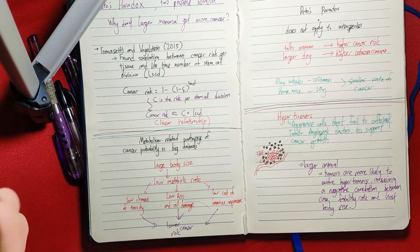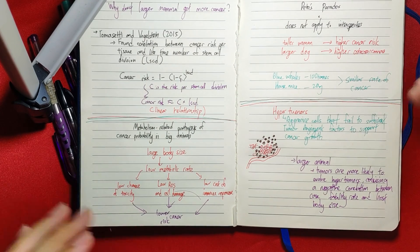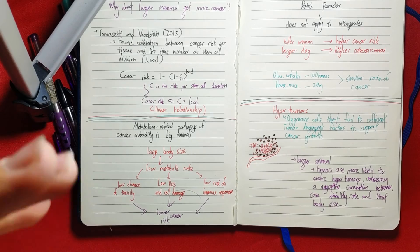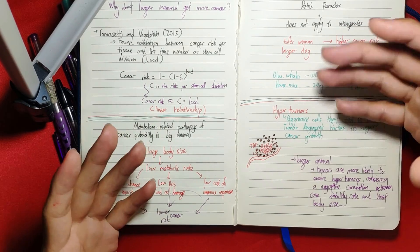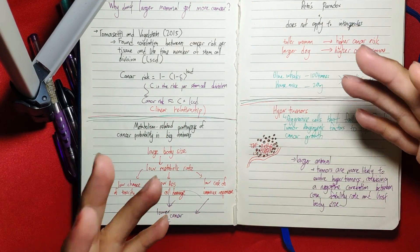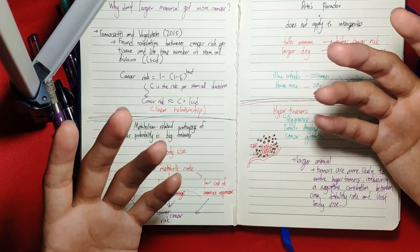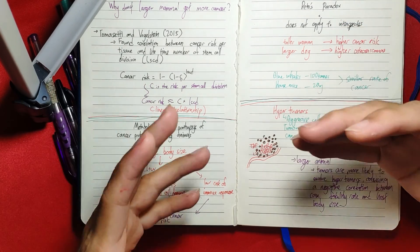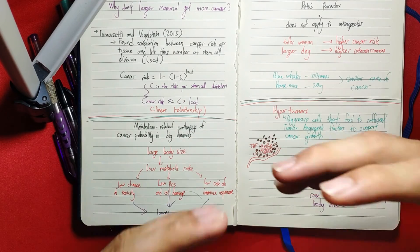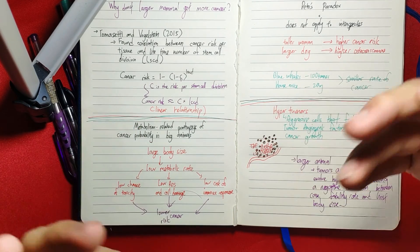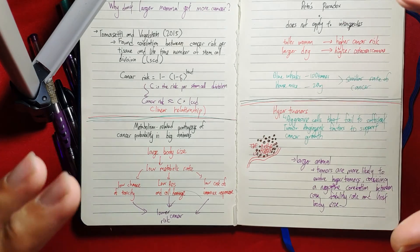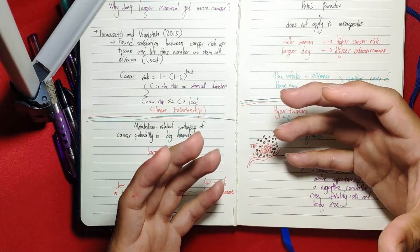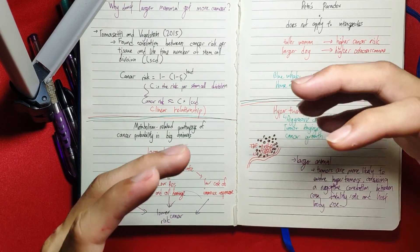That is the same article I got this from, where they talk about metabolism-related pathways of cancer probability in big animals. If you've watched Kurzgesagt videos on energy efficiency of big animals and why big animals are a better option when you have the resources - which is why in a world where oxygen concentration is really high you have dinosaurs and big insects - being big itself helps you conserve energy.